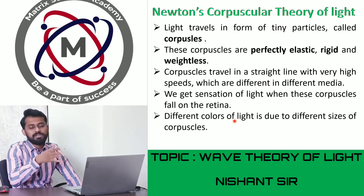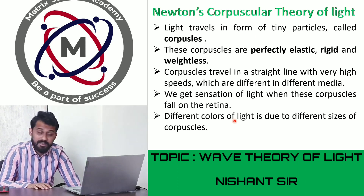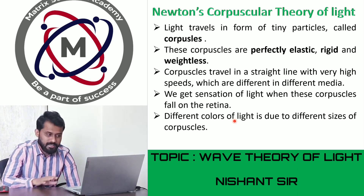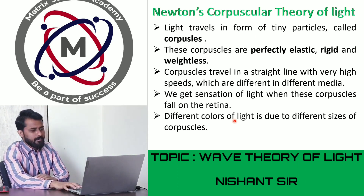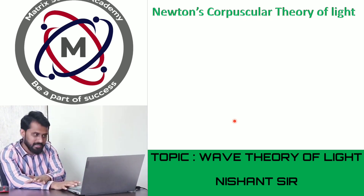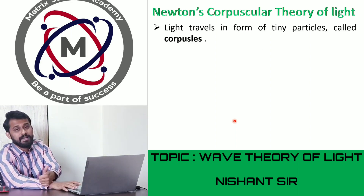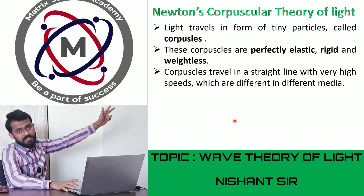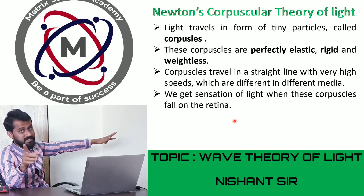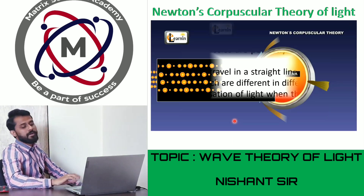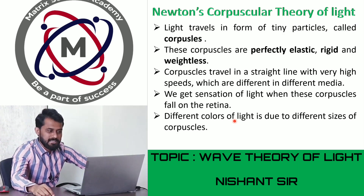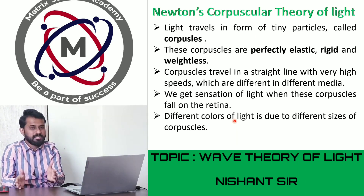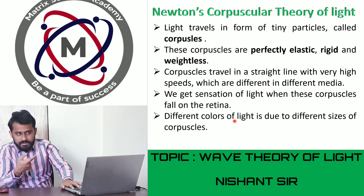Let us quickly revise Newton's corpuscular theory. The five points are: first, light travels in the form of tiny particles called corpuscles; second, corpuscles are perfectly elastic, rigid, and weightless; third, they travel in a straight line with a very large speed which is different for different media; fourth, we can only sense light when it falls on the retina; and fifth, different colors are because of different sizes of corpuscles.